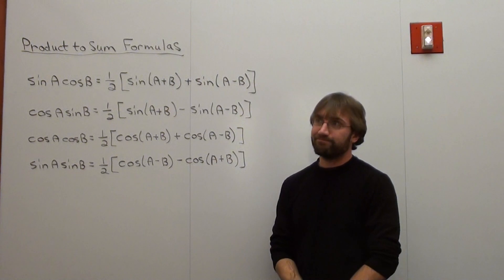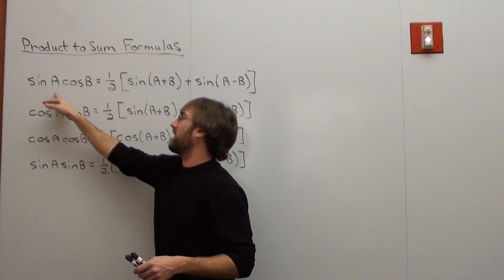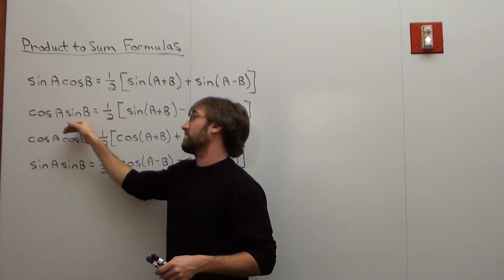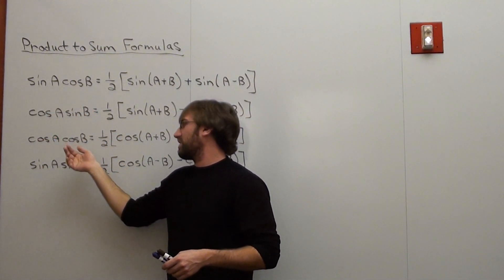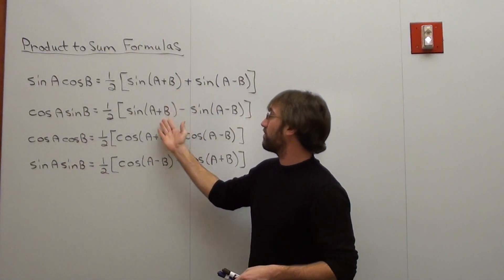You can pause it right now. Basically what you do is if you're taking the sine of an angle times the cosine of an angle, or products of sines and cosines of different angles, you follow this formula right here.